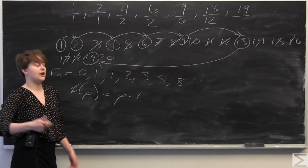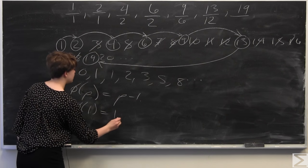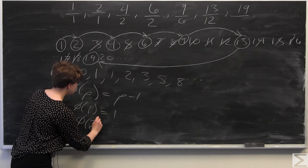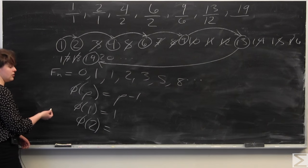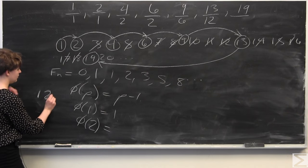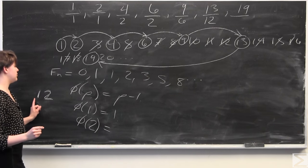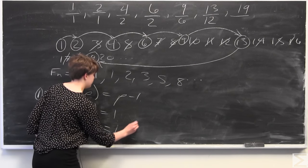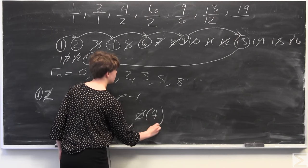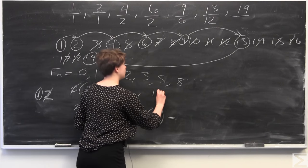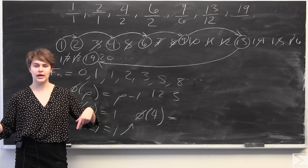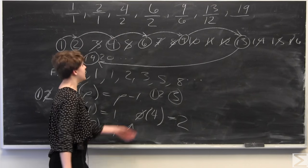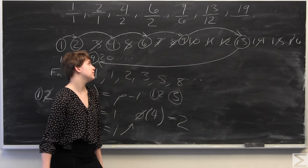The other denominators follow the same pattern. phi(1) = 1, since 1 is coprime to itself. phi(2) = 1, since the only integer less than 2 that's coprime to it is 1. phi(4) = 2, because among 1, 2, and 3, only 1 and 3 are coprime to 4. And phi(6) = 2, phi(9) = 6, and so on.